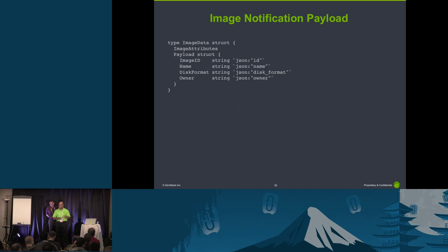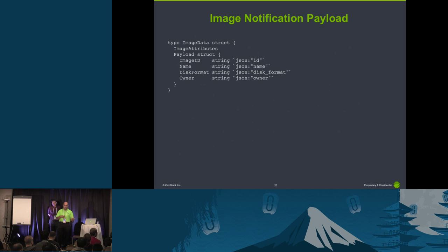Same thing with images. The examples shown talk about all the different types of entities in the system and the information in different notifications. We've collected all of these payloads, written the Golang descriptions for them, and open sourced them in the library. For some of these, we had to go back to the source rather than just observing events. You could redo the same thing in Python or any other language — nothing prevents it.